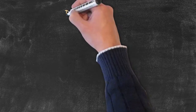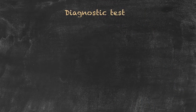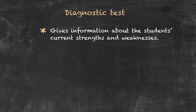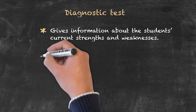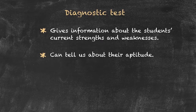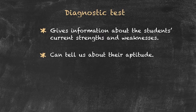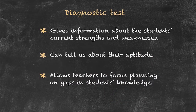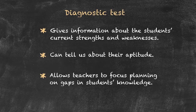The next type of test is called the diagnostic test. What a diagnostic test is really doing is telling us about the student's current strengths and weaknesses. A diagnostic test can also give us some indication of the student's aptitude and tell us something about whether or not they're going to be able to learn a particular type of material. One of the main things it can do is allow us to concentrate our planning by telling us what the students already know and the gaps in their knowledge. So a diagnostic test is very useful for the teacher in terms of the curriculum plan.